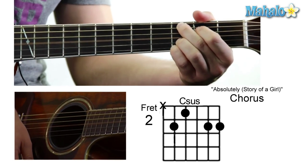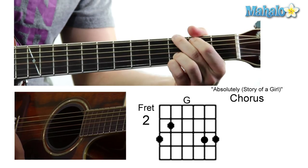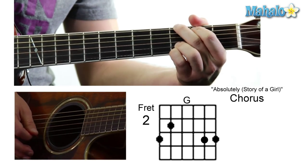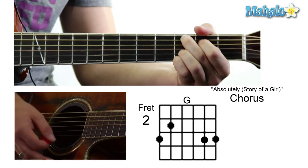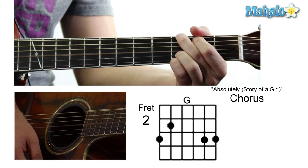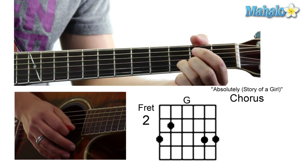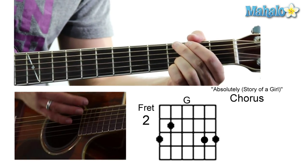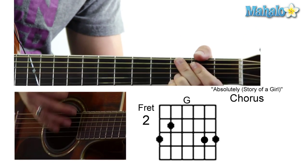This is the story of a girl. We're going to go down to a G — drop it right down: three, two, zero, zero, three, three. This is the story of a girl — ride a river and drown a whole world. See how I'm keeping my ring and my pinky down there on that third fret? That's what's going to make this song awesome.